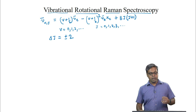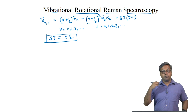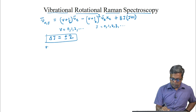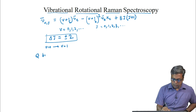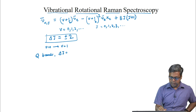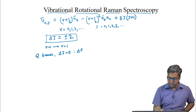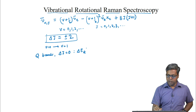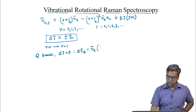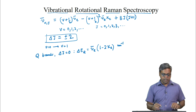Combining this rotational selection rule with the fundamental transition (V=0 to V=1), we first get the Q branch, where delta J = 0. For the Q branch, delta E_Q equals nu-bar_E * (1 minus 2*chi_E), in wave numbers.